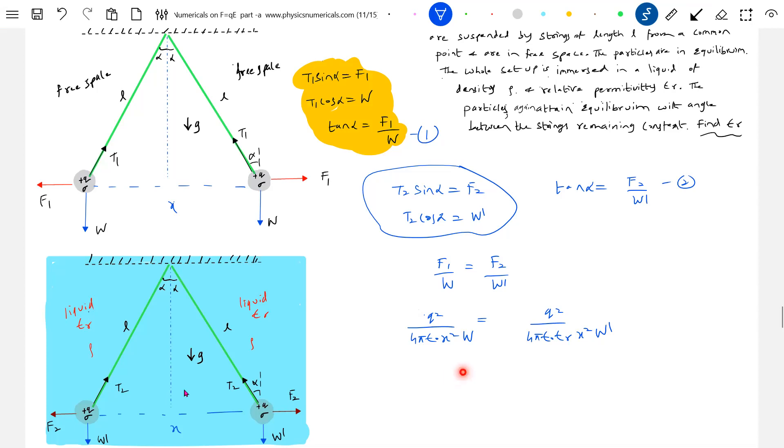So therefore epsilon_R should be equal to W by W dash. What is W? W dash will be MG minus upward thrust. What is M? Density of the spheres, small spheres, Sigma, volume V times G. What is V? Volume of the charged spheres. What is M? M is mass of the charged spheres.